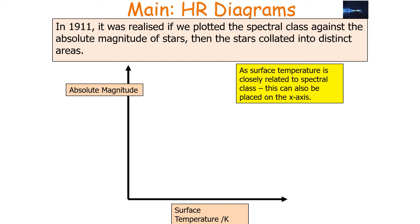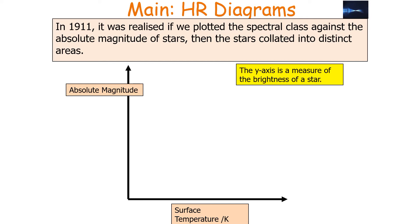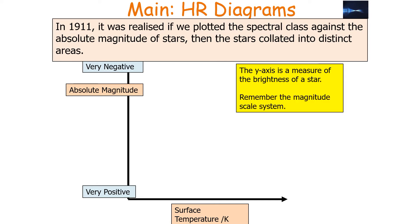As the surface temperature of a star is closely related to the spectral class, we can either place the surface temperature or the spectral class on the x-axis of a Hertzsprung-Russell diagram, whilst the y-axis is a measure of the brightness of a star — its absolute magnitude. We have very bright at the top and very dim at the bottom. From the absolute magnitude scale, very bright is a very negative value whilst very dim is a very positive value, so we have to remember the magnitude scale system.